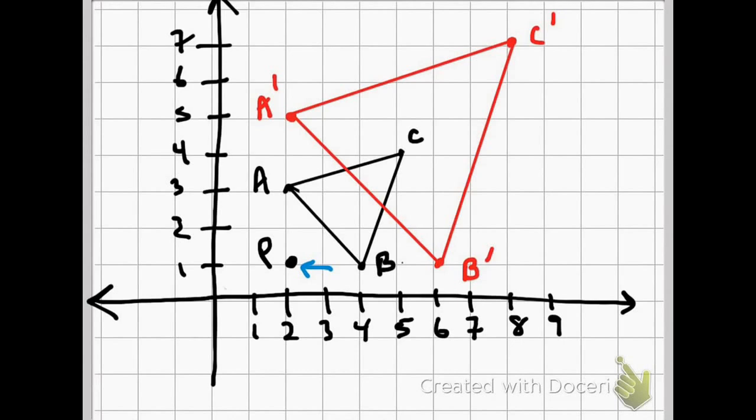Since the figure is being dilated around a point that is not the origin, this problem becomes a little more difficult. The best way to do this is to connect the dilation point with the vertices of the shape, like so. This will give you something similar to what we did in class with the compass and straightedge.